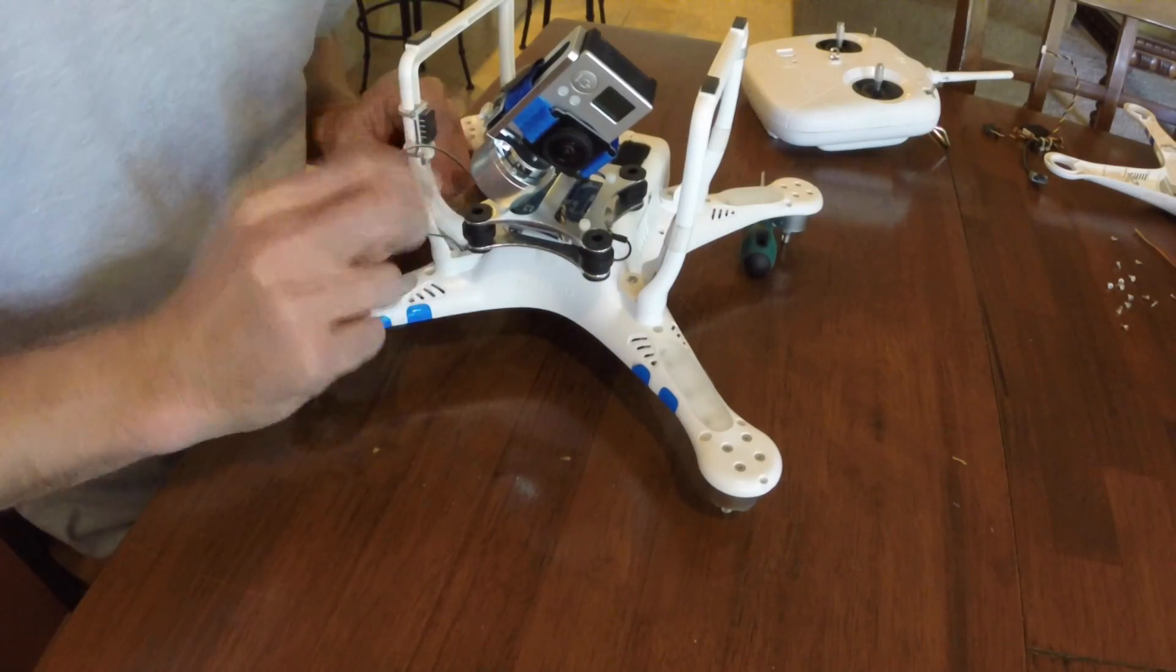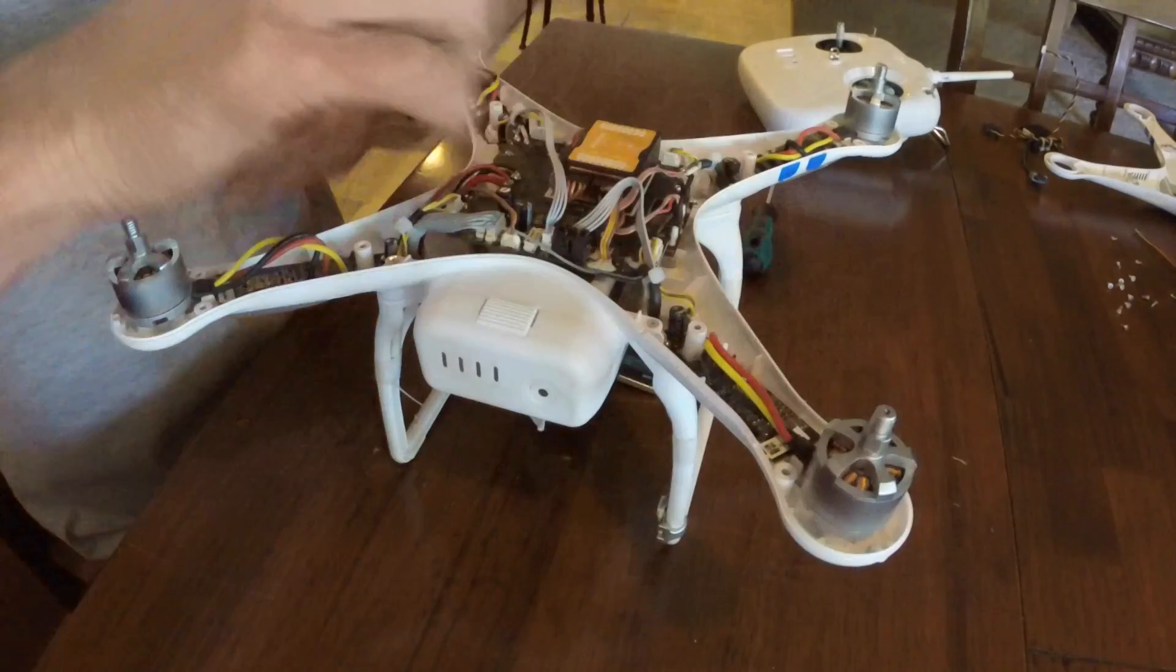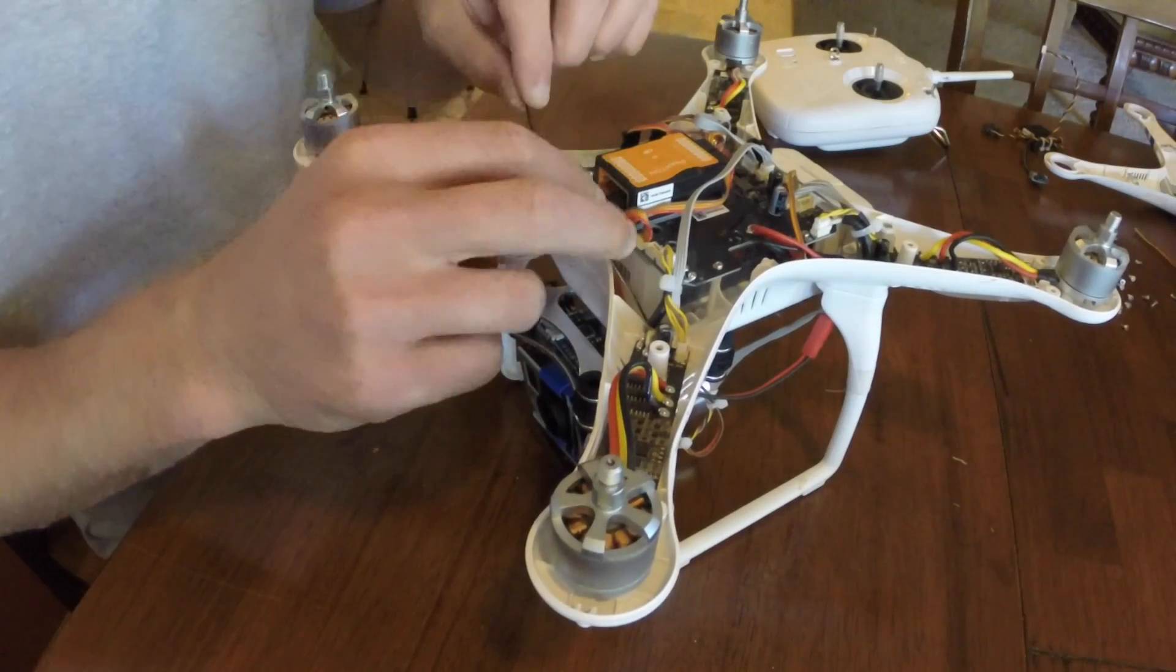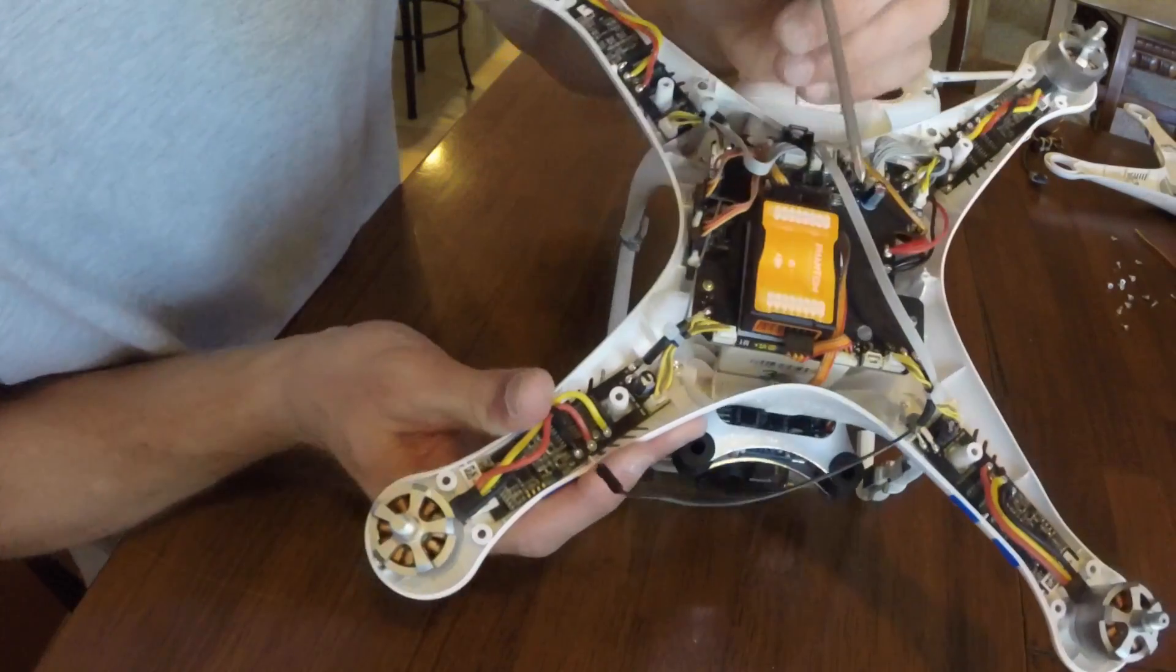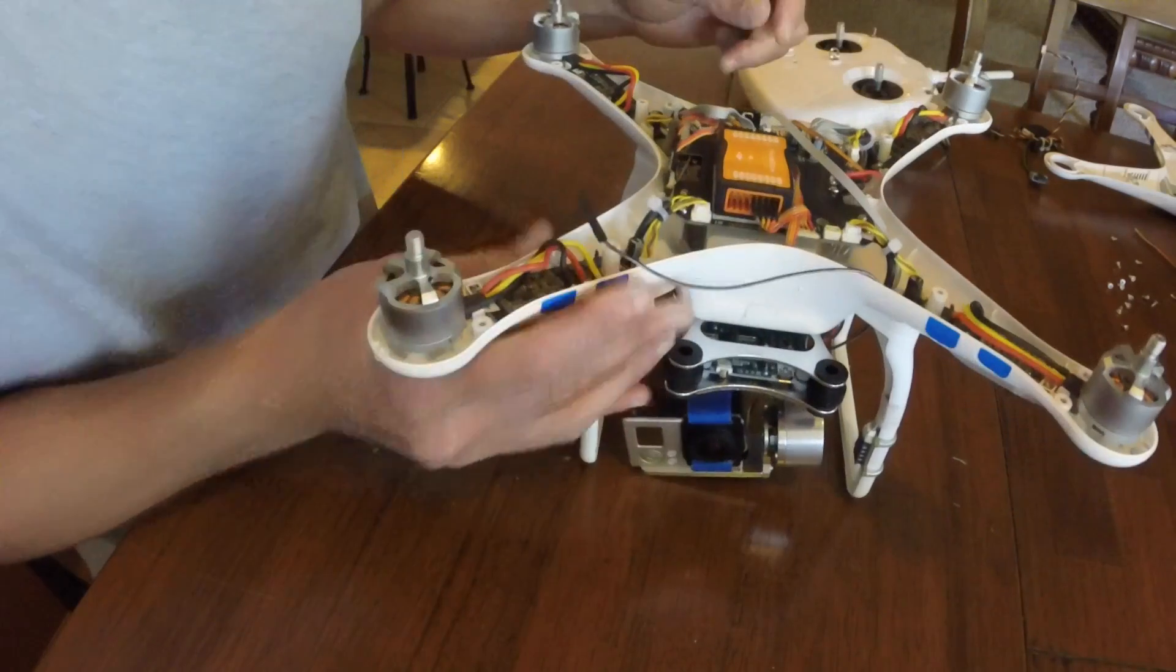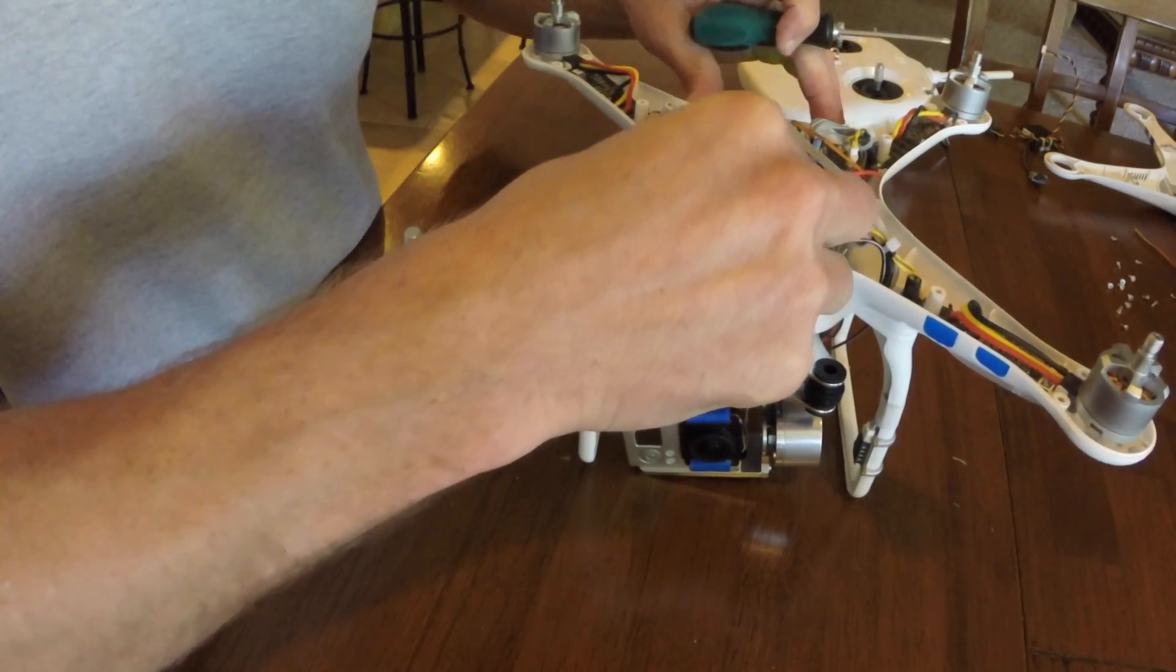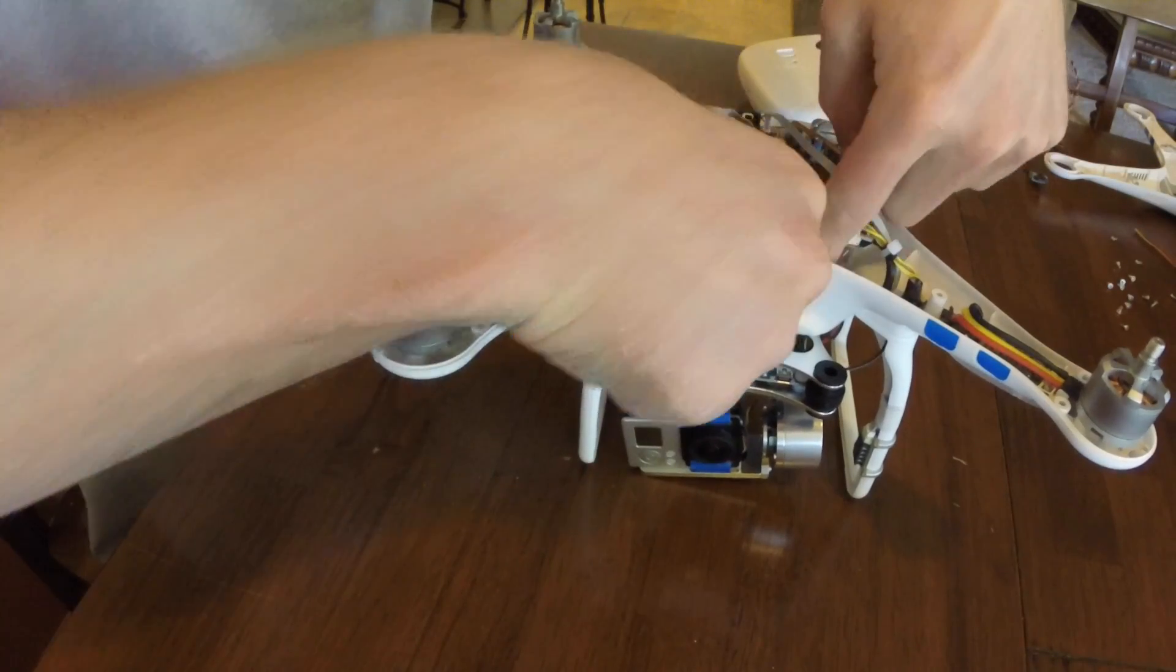Then you're going to maneuver the wire through another one of the holes on the Phantom's arm, pull it up through, and you're going to attach it to the NAZA. Here you're going to connect it to F2 and to the bottom left pin. Tuck the wires away so when you place the top back on the Phantom, they are not smashed or cut.